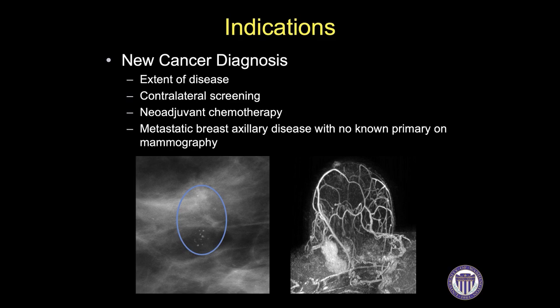An additional biopsy of one of these masses showed invasive ductal carcinoma. Therefore, the patient had much larger extent of disease than on initial mammographic assessment. There was also a change from ductal carcinoma in situ to an invasive cancer diagnosis up front, which significantly changed her management plan.